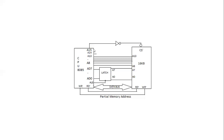With A0 to A15, that is 16 address lines, we have 2 to the power of 16 unique combinations — that many individual lines are present. Inside each location you store 8-bit data. So the total capacity of this main memory is 2 power 16 into 8. We have 16 address lines that can individually address 2 power 16 memory locations.